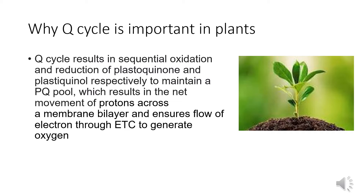Due to photosynthesis, plants can generate oxygen via the electron transport chain. For the electron transport chain to transfer electrons, it needs a flow of electrons, which comes from oxidation and reduction of various molecules — one of which is plastoquinone. This maintains a PQ pool inside the thylakoid system that helps in the movement of protons across the membrane bilayer, ensuring the flow of electrons to finally generate oxygen.